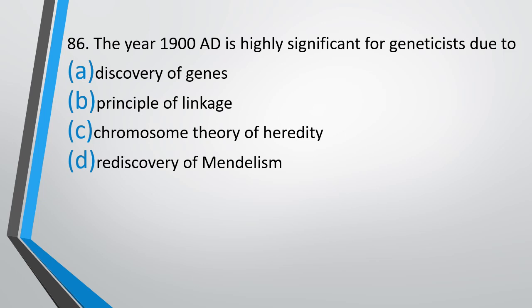Question No. 86. The year 1900 AD is highly significant for geneticists due to which of the following? Option A: Discovery of genes. Option B: Principle of linkage. Option C: Chromosomal theory of heredity. Option D: Rediscovery of Mendelism. The correct answer is Option D: Rediscovery of Mendelism.